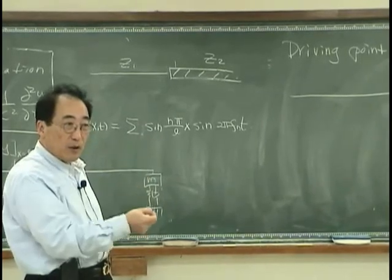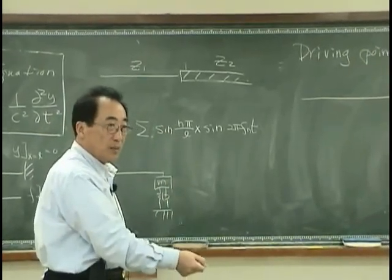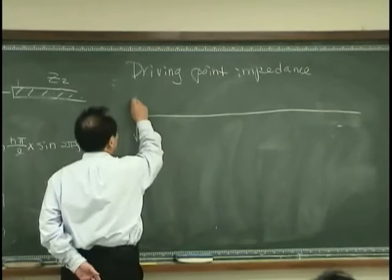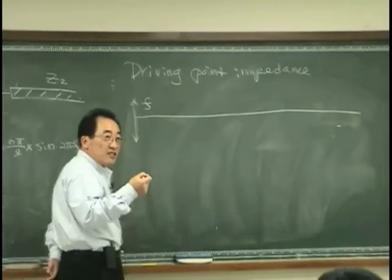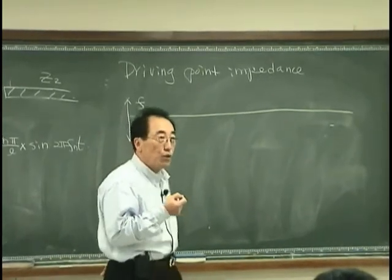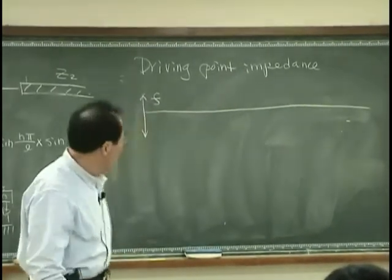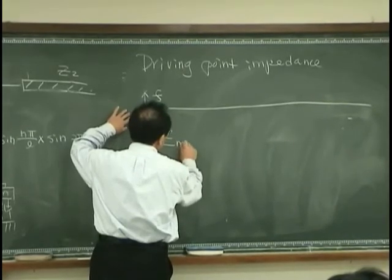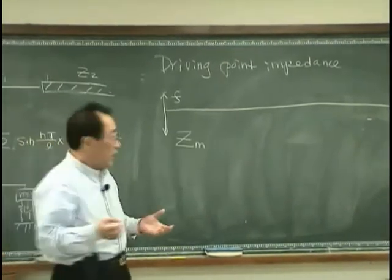What would happen? When I move up, the string follows me. When I move down, the string follows me. So when I move up and down with some force, the direction of velocity is the same as the direction of force — in other words, same phase. So if the string is infinite, then the driving point impedance, which I write as Zm or mechanical impedance, should be real.